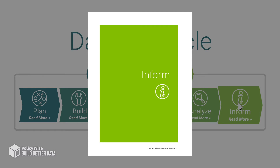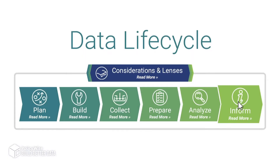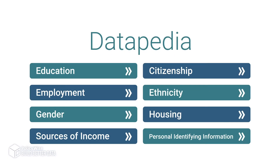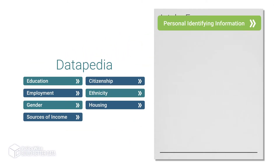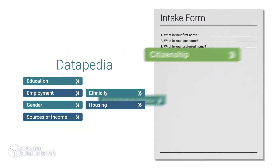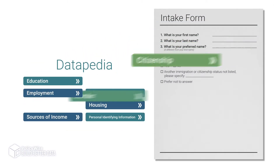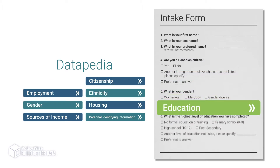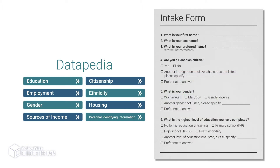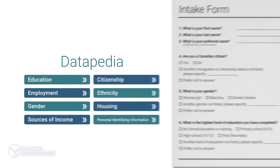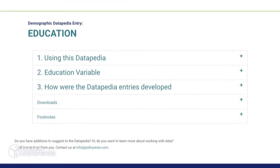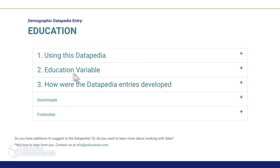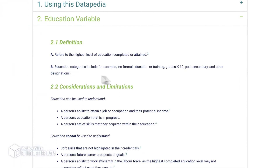The Datapedia is a question bank with ideas to consider when creating demographic questions, such as the ones often used on intake or registration forms. Each demographic variable has its own entry, which includes a definition and various considerations.